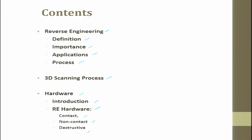Destructive means you are damaging the workpiece or product and then trying to understand the mechanism of failure, or understand the shape and size from the damaged product. But the component cannot be reused — the moment you break it, it cannot be reused. Contact and non-contact are non-destructive methods — you touch the part and try to take the measurements you want. Those are called non-destructive methods.